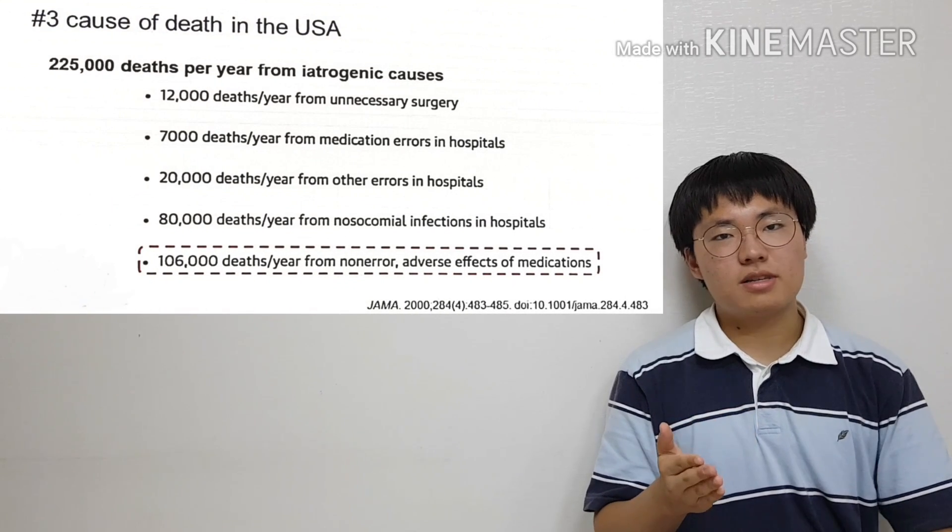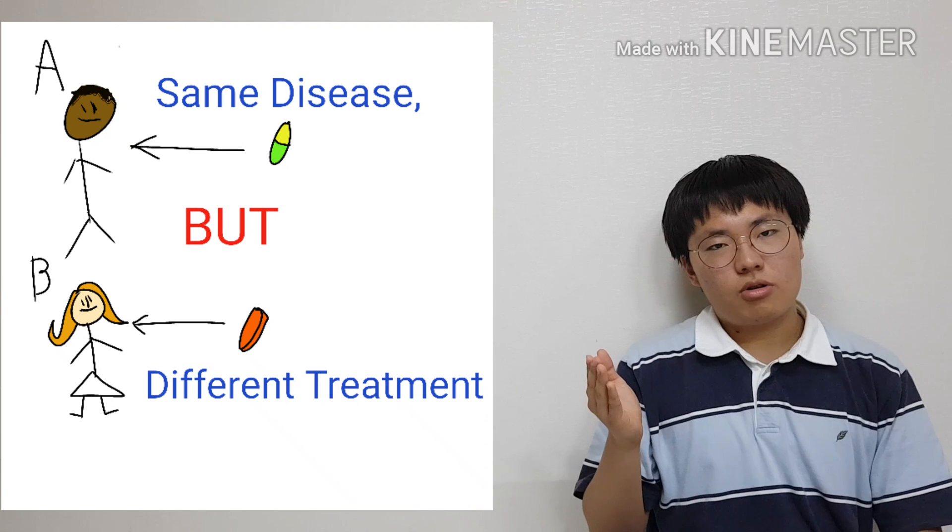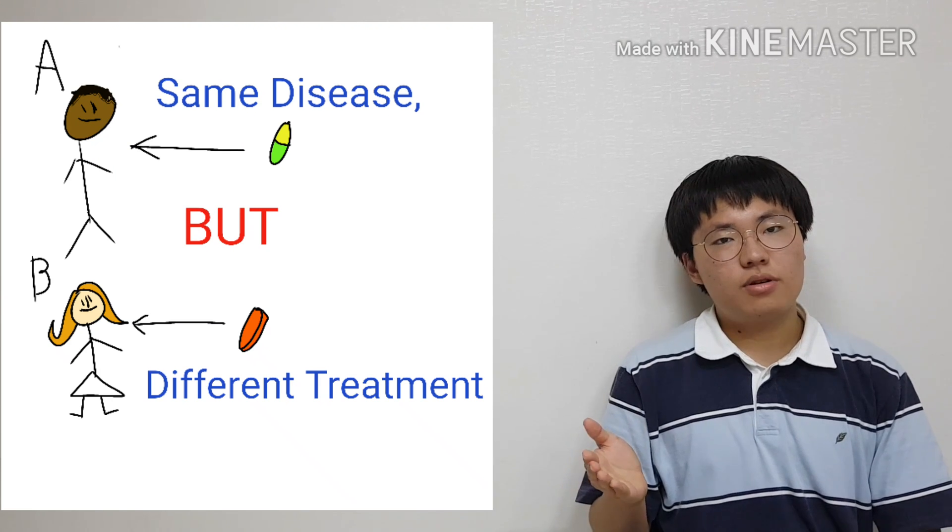Therefore, one medication can work well for somebody while causing adverse side effects to others, which can sometimes be fatal. In fact, according to JAMA, 106,000 Americans die each year due to adverse effects of medications. Precision medicine is meant to solve such issues by providing precise or personalized medication for everyone.